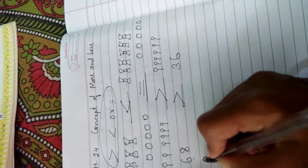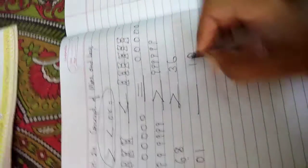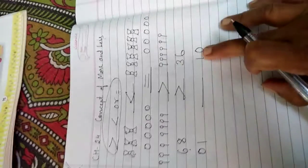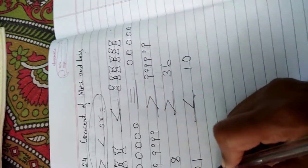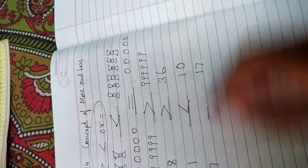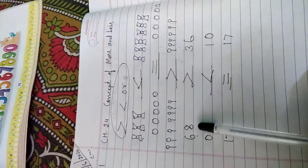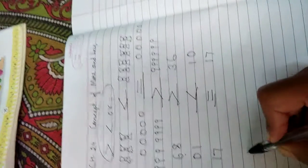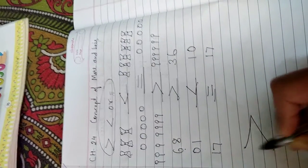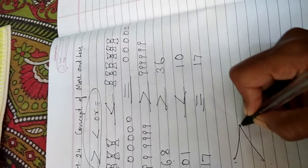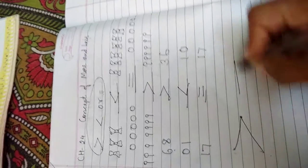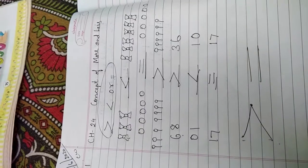Where there is more number, the mouth is open. Where there is more number, the mouth is open. The small digit side will be closed. And the same numbers will have equal to sign. Keep this in your mind.